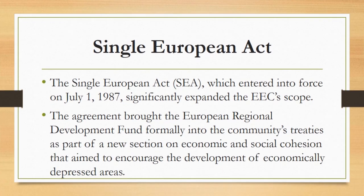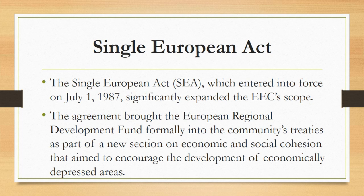Single European Act: The Single European Act (SEA), which entered into force on July 1, 1987, significantly expanded the EEC's scope. It gave the meetings of the EPC a legal basis and called for more intensive coordination of foreign policy among members. The agreement brought the European Regional Development Fund formally into the community's treaties as part of a new section on economic and social cohesion, aimed at encouraging the development of economically depressed areas. As a result, there was a substantial increase in funding for social and regional programs, and the SEA set out a timetable for the completion of the common market.